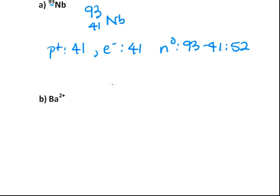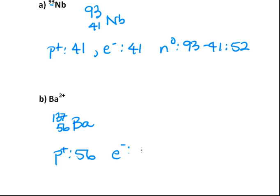What about barium? Here we have barium with a 2+ charge. Looking up elemental barium, the atomic mass is 137 and the atomic number is 56. So the number of protons must be 56. The number of electrons will not be 56 — there are 2 missing, so it must be 54. And the number of neutrons is 137 minus 56, which is 82.